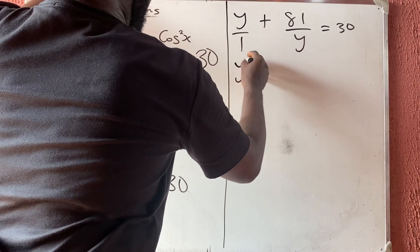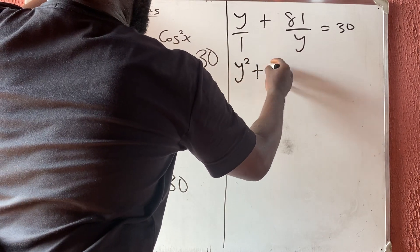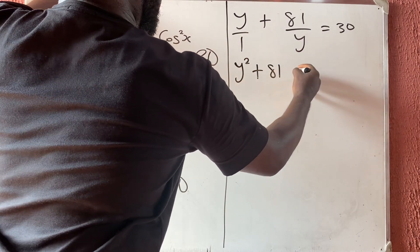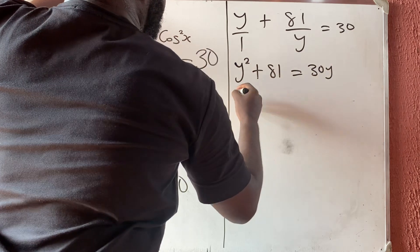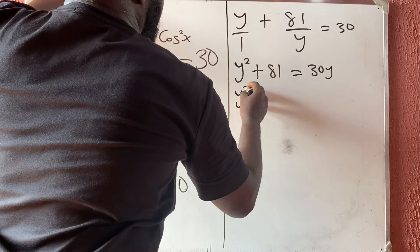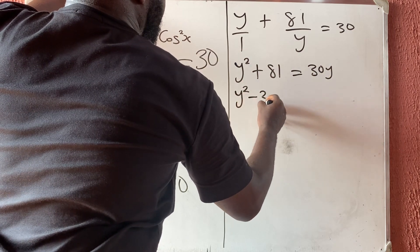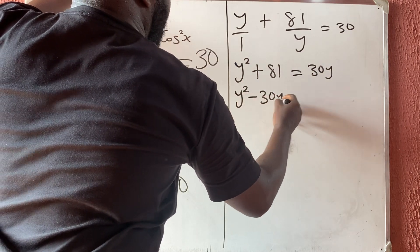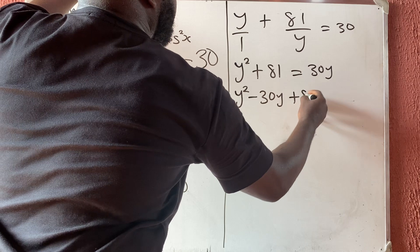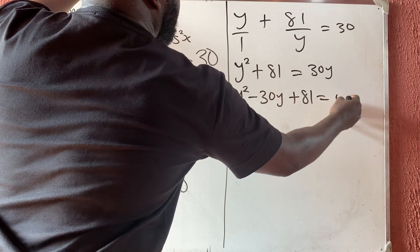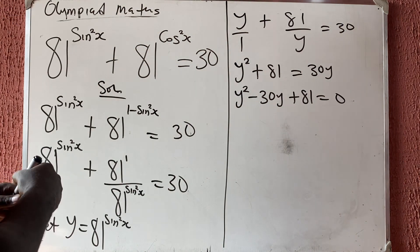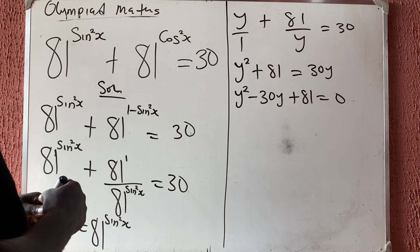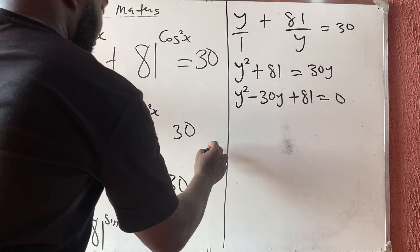Multiplying everybody by y, we get y squared plus 81 equals 30y. Rearranging, we have y squared minus 30y plus 81 equals 0.